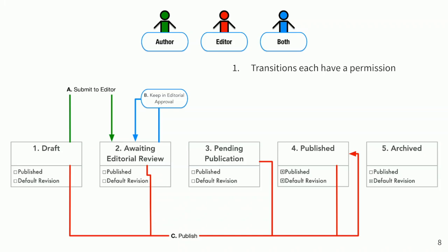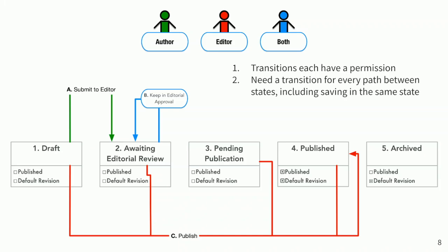Let's follow a piece of content through the system. The author comes along, creates a draft, and submits it to the editor. Then the author and the editor might spend a few rounds of revisioning to try and get the thing ready for publication — that's where 'keep in editorial approval' comes in. That's the second of four things to understand: you need a transition for every path between the states, and that includes saving into the same state. If we didn't have that transition, the only option after submitting to the editor would be to publish it if we made another change.